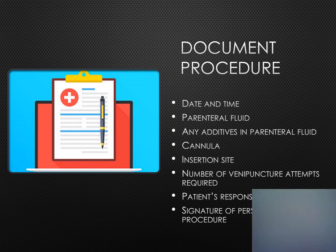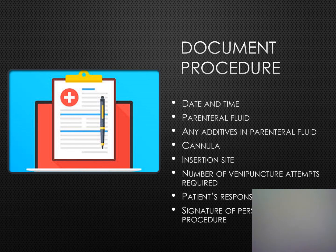Document the procedure, including the type of fluid used, the volume and flow rate, any additives and their dosage, the type of cannula used along with its size and length, how many venipuncture attempts were required to successfully cannulate the vein, how the client responded to the procedure, and the name of the person who performed the venipuncture.